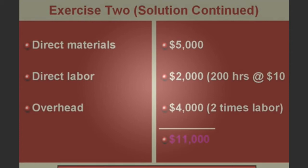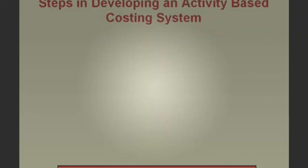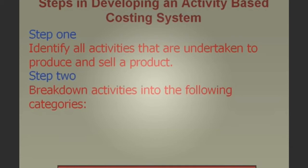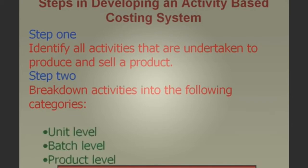Let's go to ABC. Let's talk about the steps in developing an activity-based costing system. Step 1: identify all activities undertaken to produce and sell a product. Step 2: break down the activities into four categories — unit level, batch level, product level, and facility level.